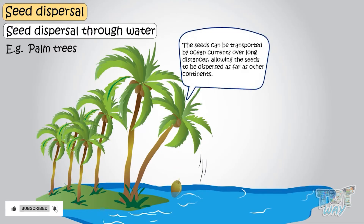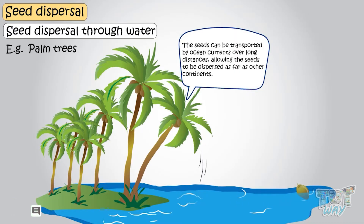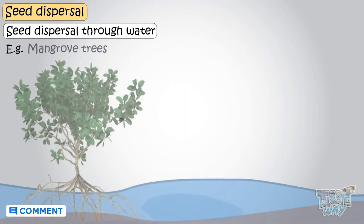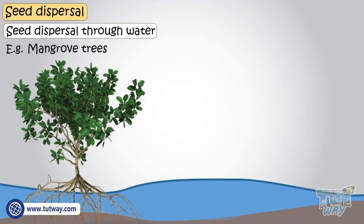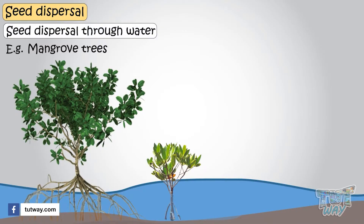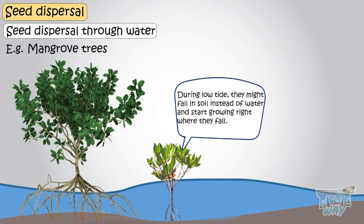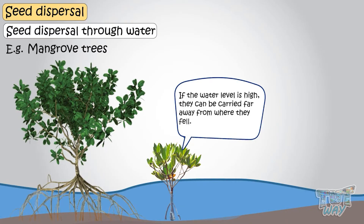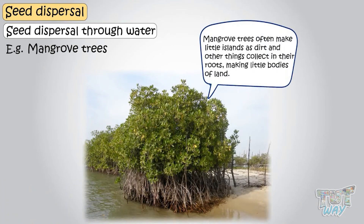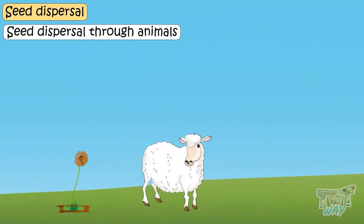The seeds of palm trees can also be dispersed by water. If they grow near oceans, the seeds can be transported by ocean currents over long distances, even to other continents. Mangrove trees live right in the water — their seeds fall from the tree and grow roots as soon as they touch soil. During low tide they may start growing where they fell, but if the water level is high they can be carried far away, and mangrove trees often form little islands as dirt collects in their roots.